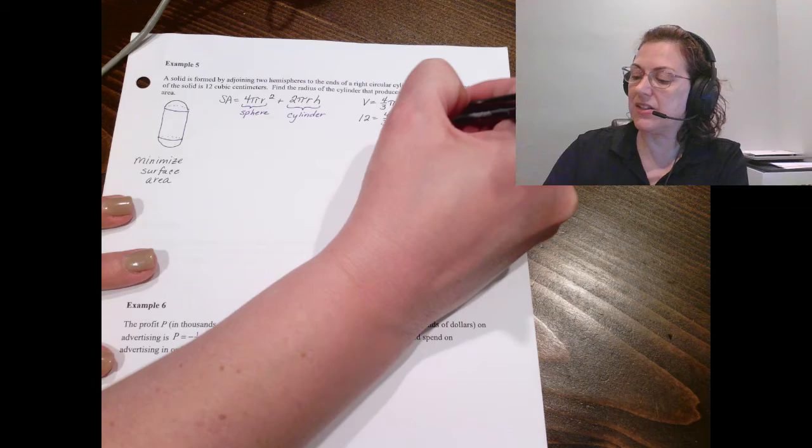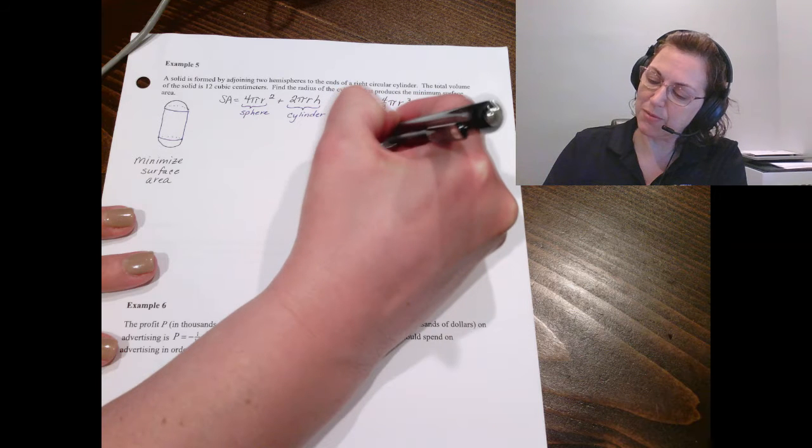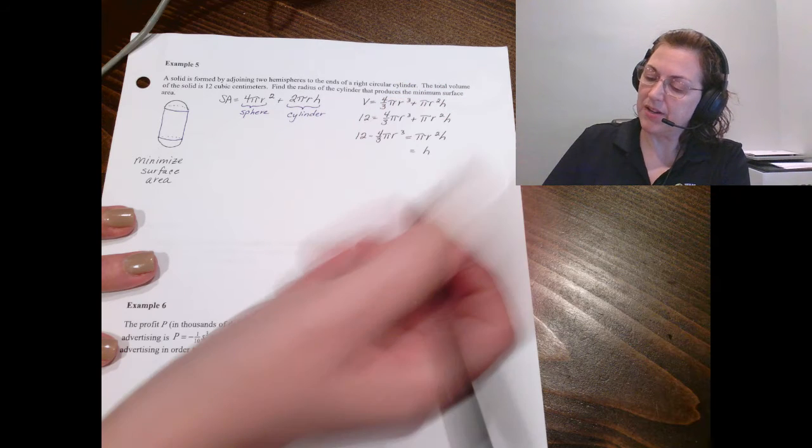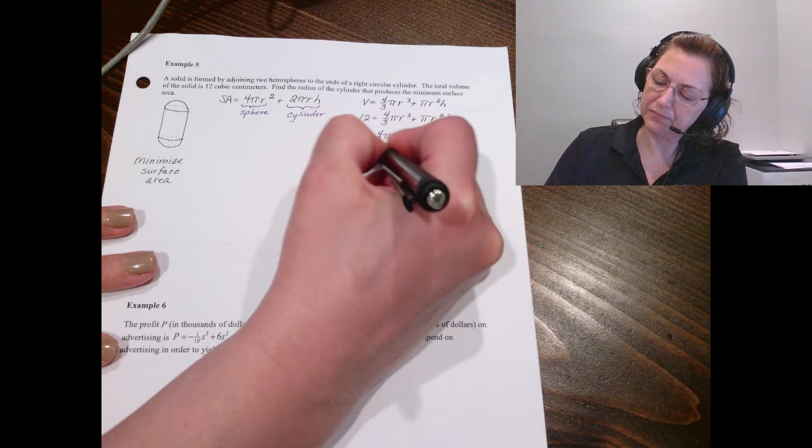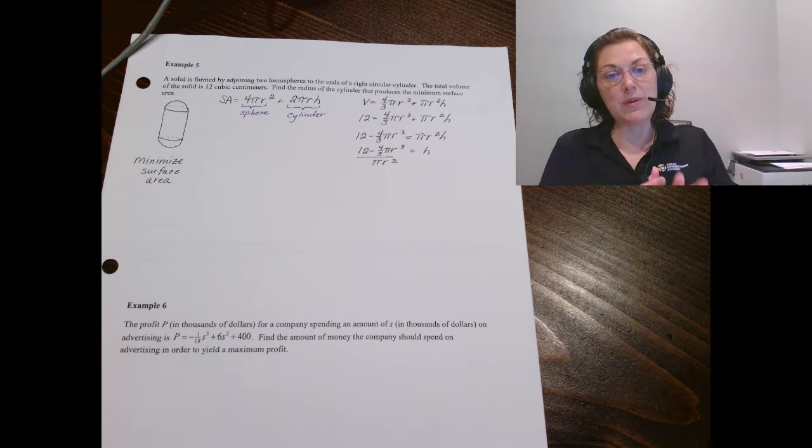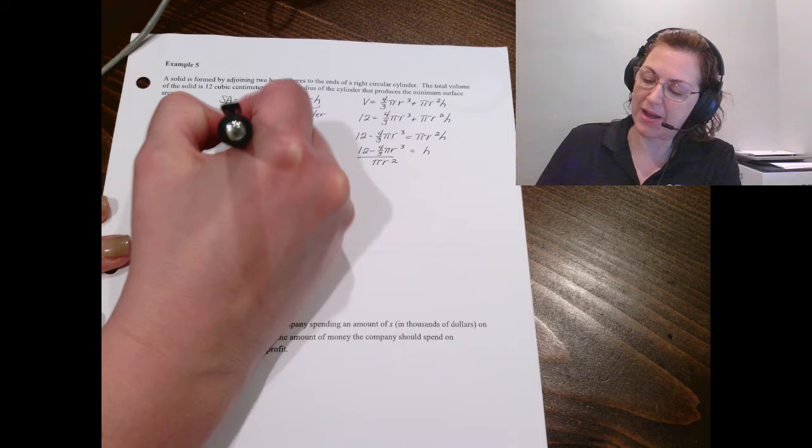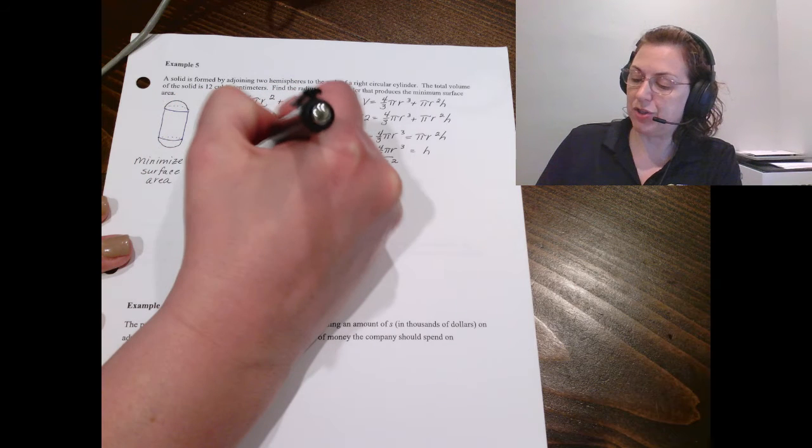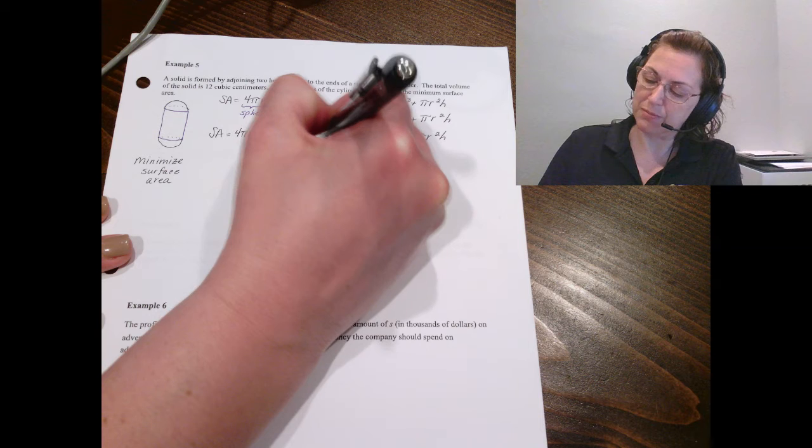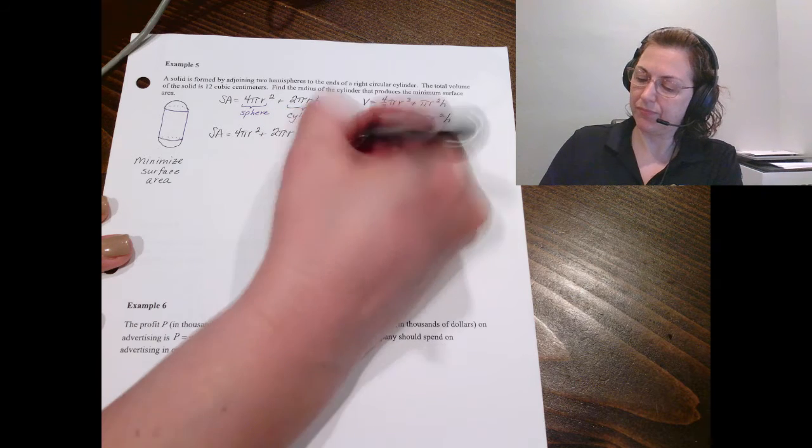So let's go ahead and solve for h here. That way we can eliminate the h. I'm going to subtract the 4/3πr³. Then I will divide by the πr². It's not going to look pretty, but that's okay. And then this is what we will substitute in for the h in my surface area. So I have my 4πr² plus 2πr, and then I want to substitute in for h. So I've got (12 - 4/3πr³) / πr².